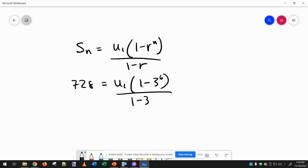So now we know everything we need to know except the first term, so we can solve this equation. 1 minus 3 is negative 2, so if I multiply by negative 2 over here, that will cancel this out.